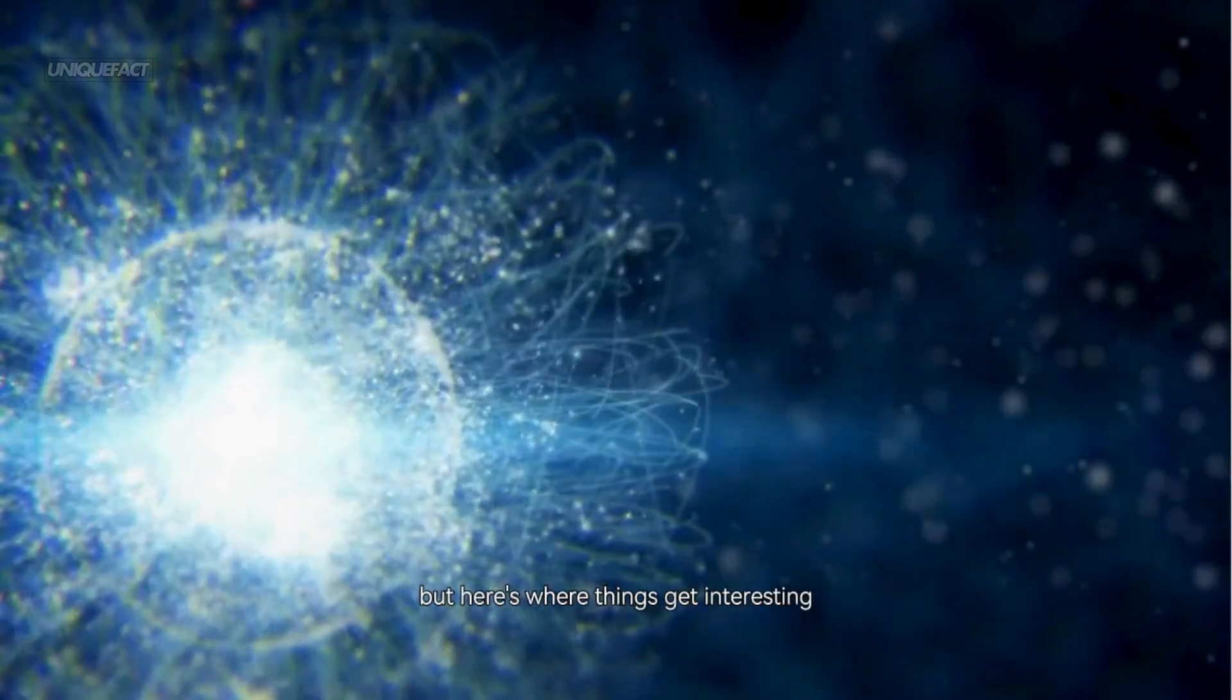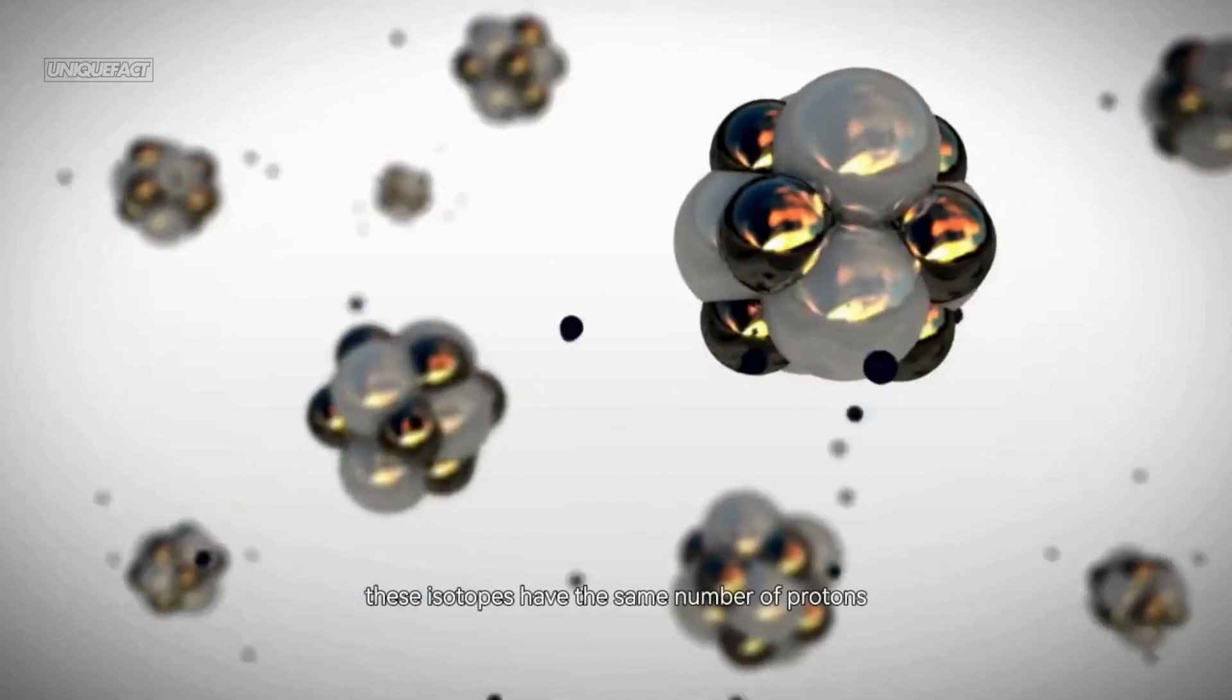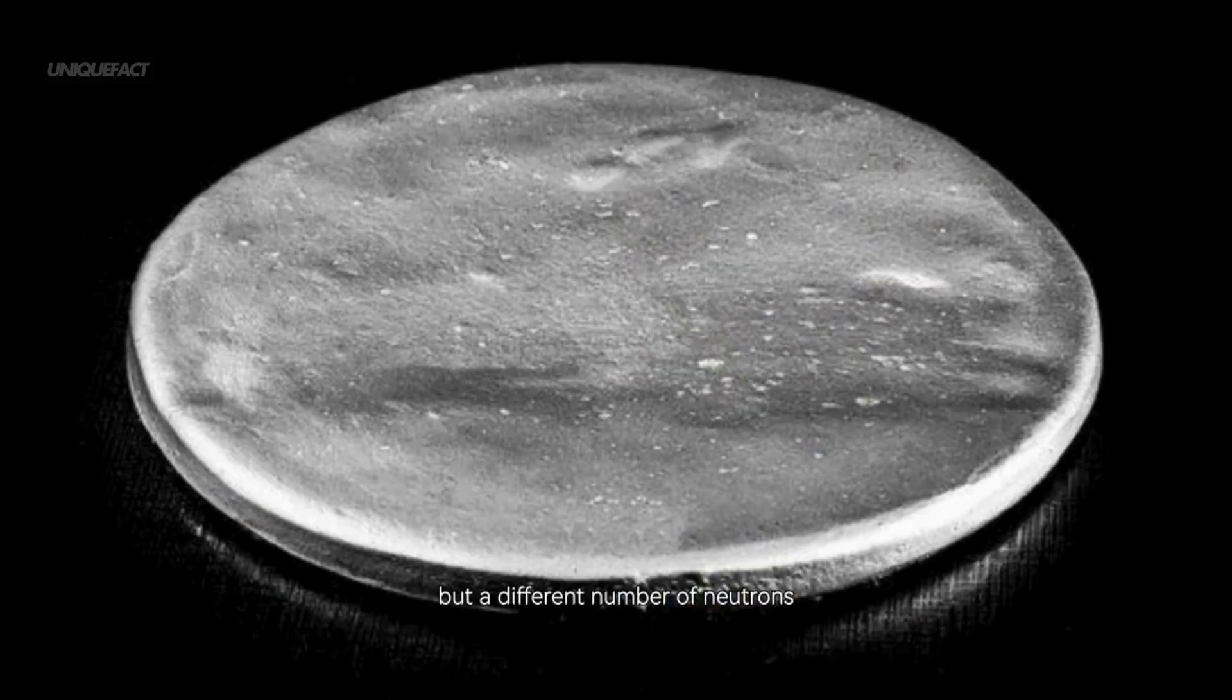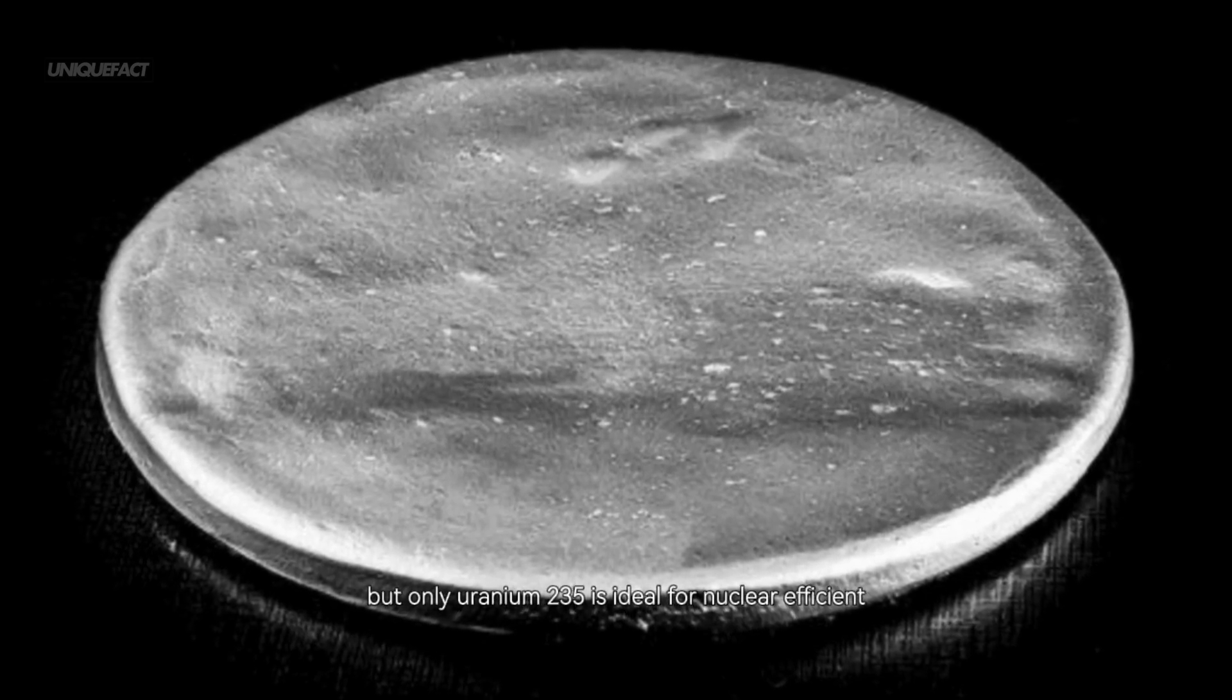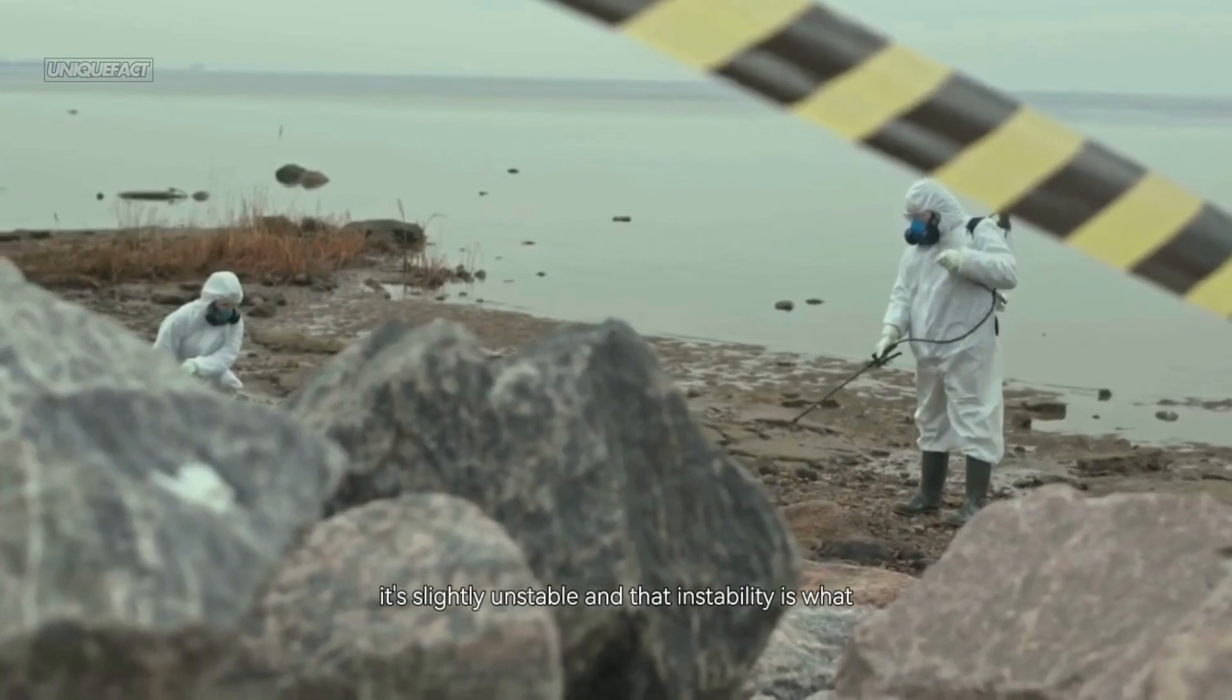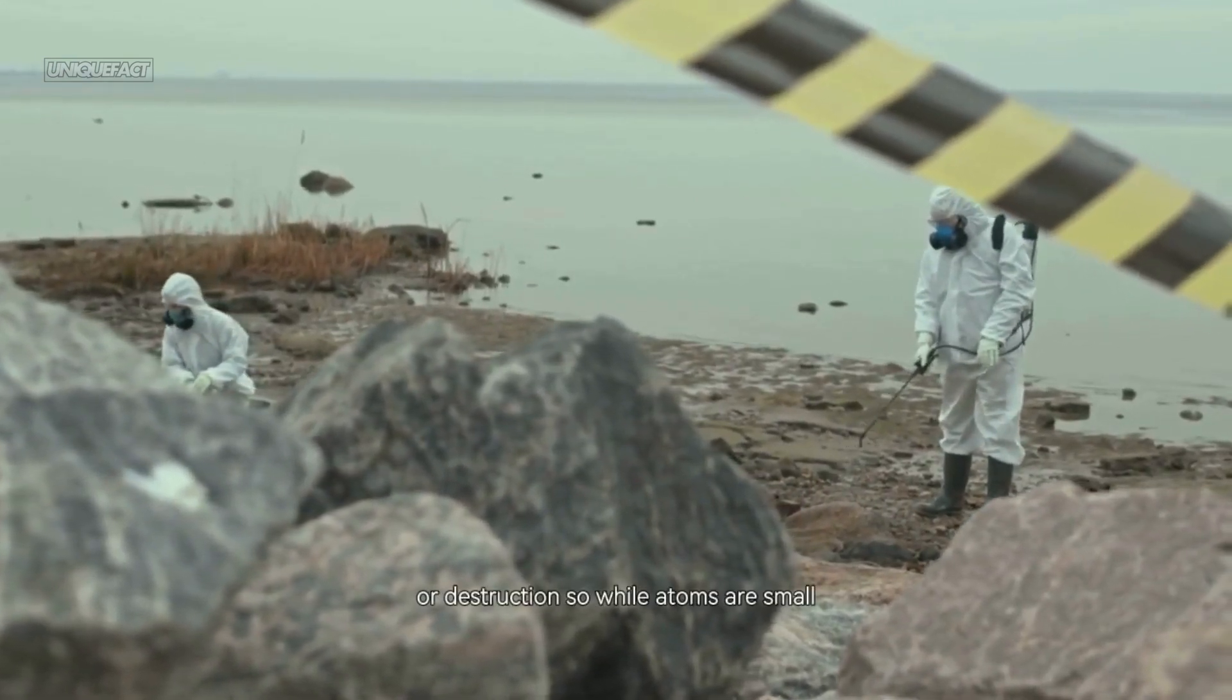But here's where things get interesting. Atoms of the same element can come in different versions called isotopes. These isotopes have the same number of protons but a different number of neutrons. For example, uranium has several isotopes, but only uranium-235 is ideal for nuclear fission. It's slightly unstable, and that instability is what scientists have learned to harness either for energy or destruction.